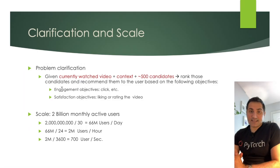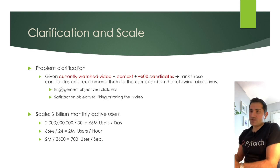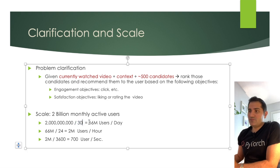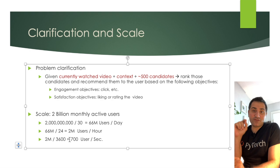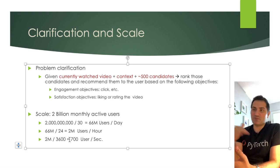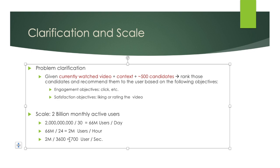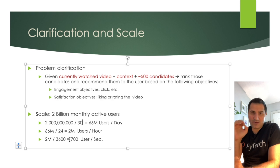Let's talk about scale. YouTube has roughly 2 billion monthly active users. Dividing by 30 days gives 66 million daily active users; divided by 24 gives 2 million hourly; divided by 3,600 gives about 700 active users per second. Our system must be very efficient to process 700 active users per second — and even more during peak times — with very low latency.